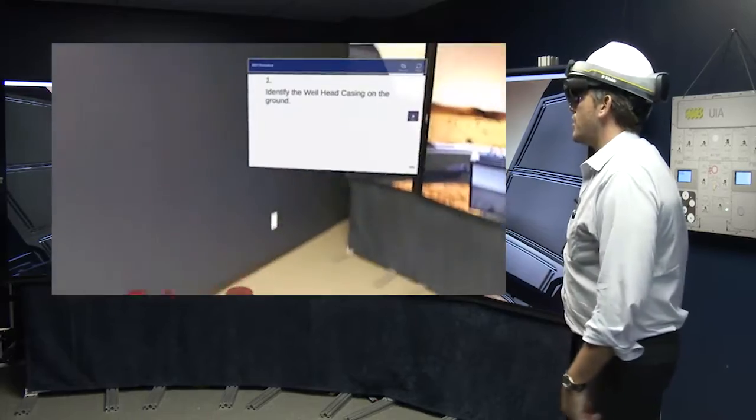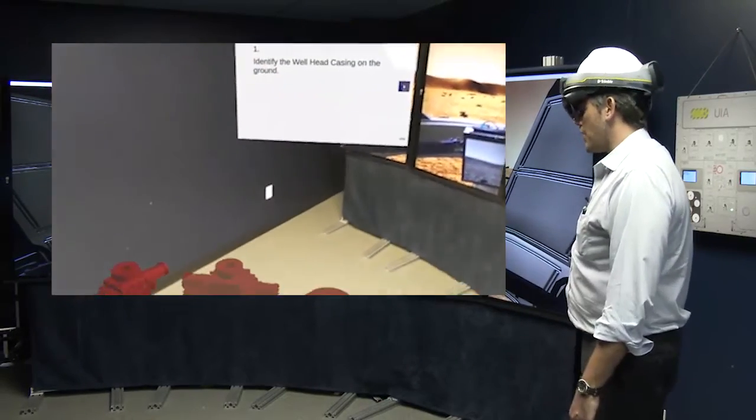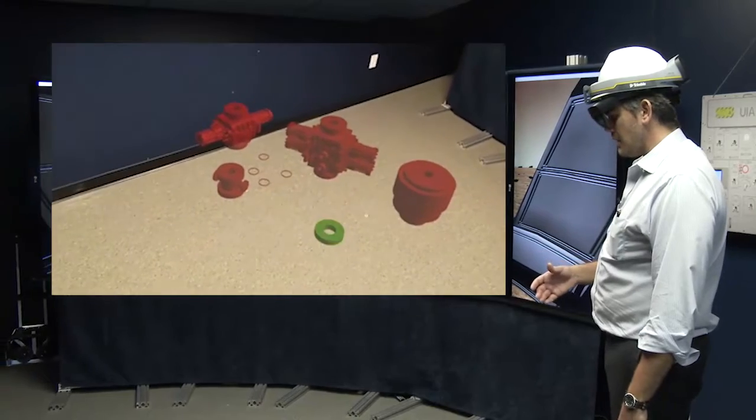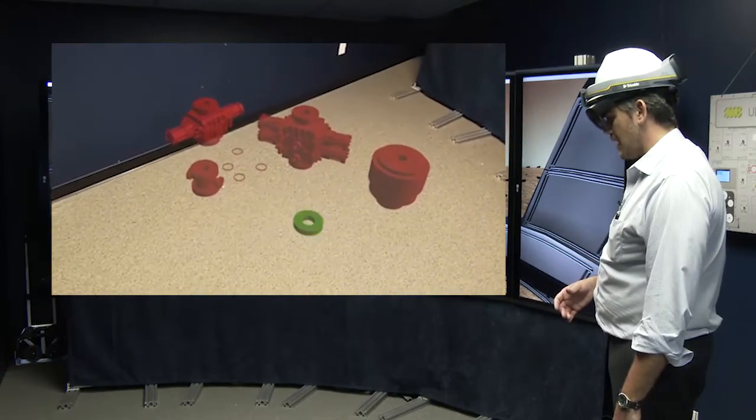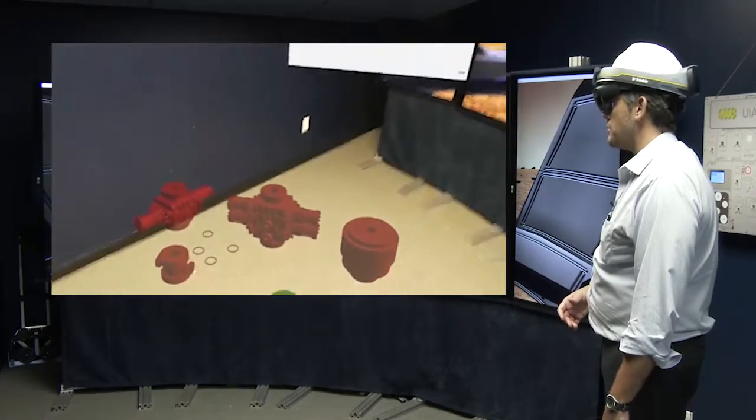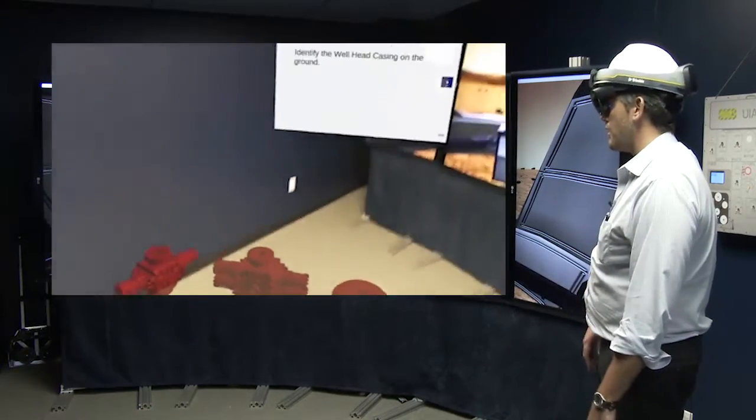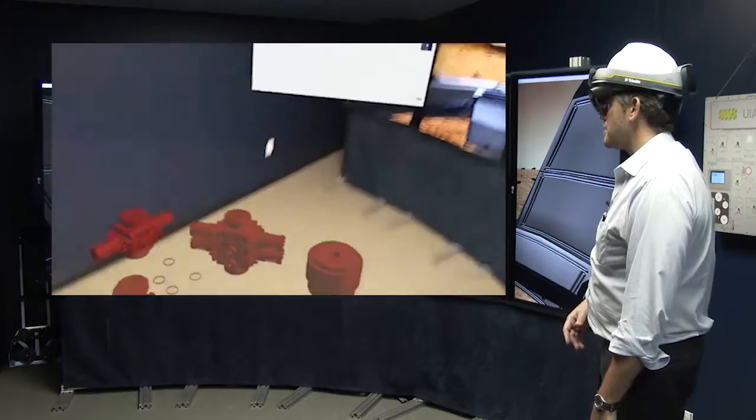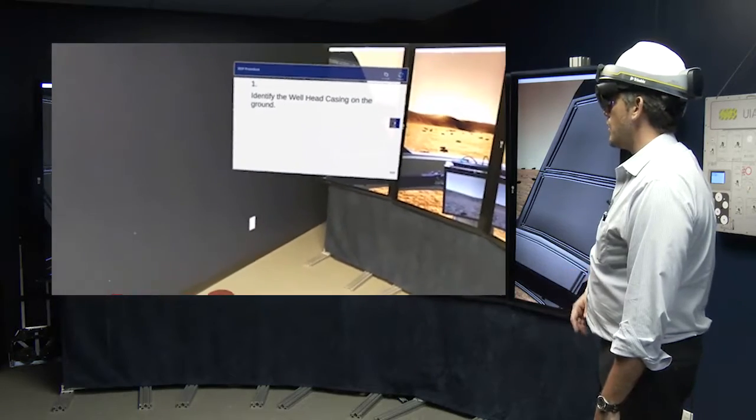So step one, identify the wellhead casing on the ground. So what you're going to notice is the green and yellow flashing actual piece of equipment, that is going to be the step that it's associated to. So essentially let's pretend that's the wellhead. So we've identified step one. There is the wellhead.